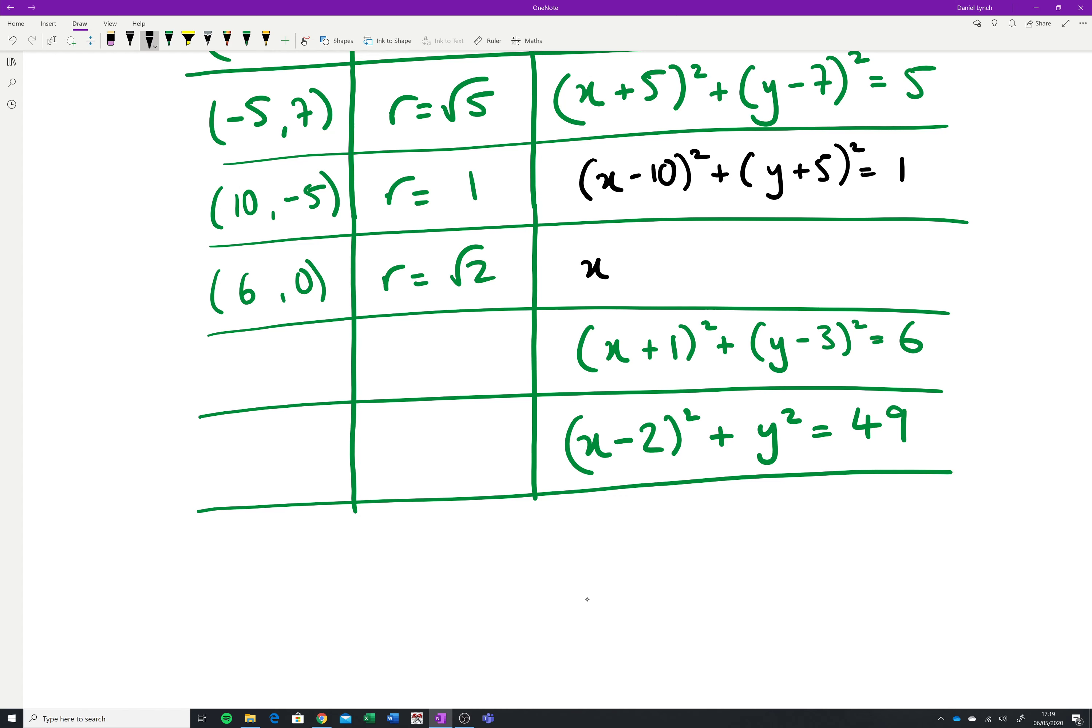In this case it's x minus 6 squared added to, well this is y minus 0 squared, I would just call it y squared. And it's equal to root 2 when squared, that's just 2.